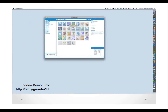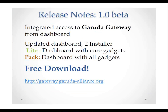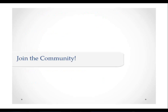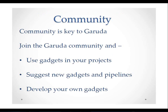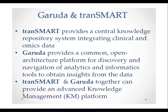For the last couple of minutes I want to go through the roadmap of Garuda. We released it in summer 2014 in Boston. Version 1.0 beta is freely available for download at our website. It has around 35 gadgets and is currently available on Mac and Windows, with latest versions on request for Linux. We provide invited access to the Garuda Gateway at gateway.garuda-alliance.org. It's impossible for a single group to develop all necessary tools, so we urge the Transmart community to join Garuda, use the gadgets, suggest new gadgets and pipelines, and develop their own gadgets.